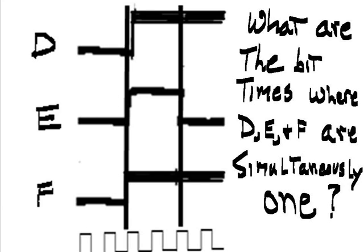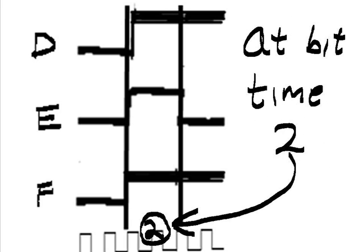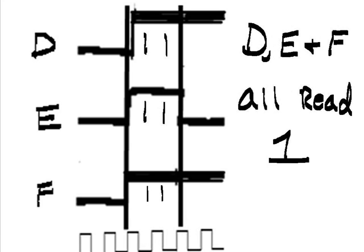What are the bit times where D, E, and F are simultaneously 1? At bit time 2, D, E, and F all read 1s.